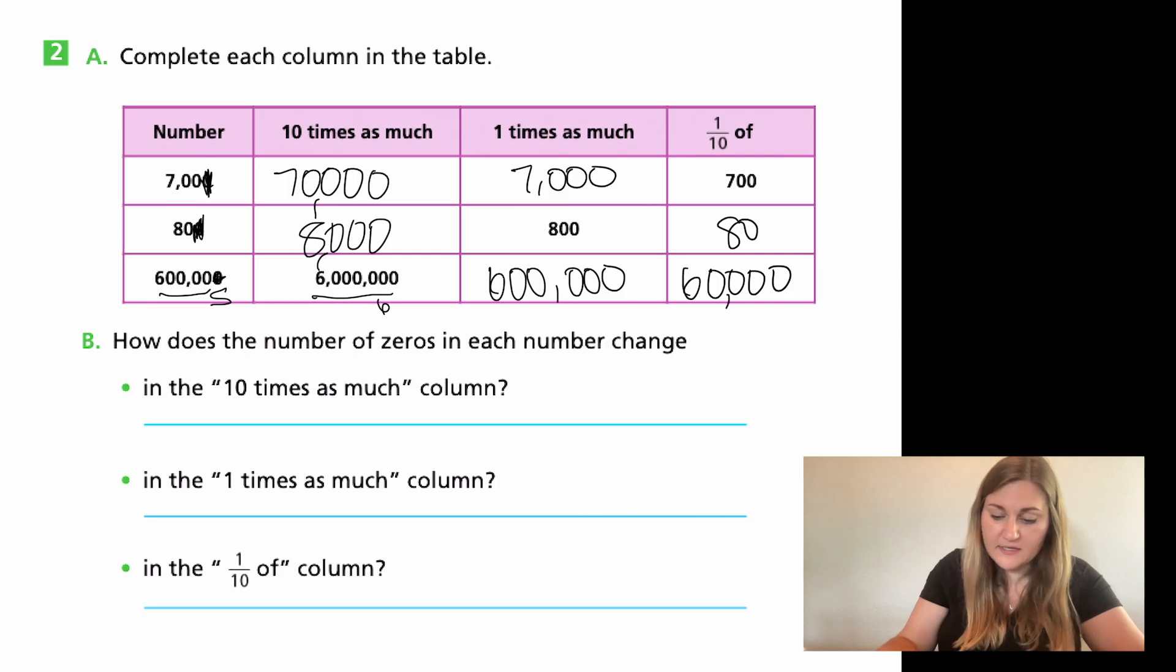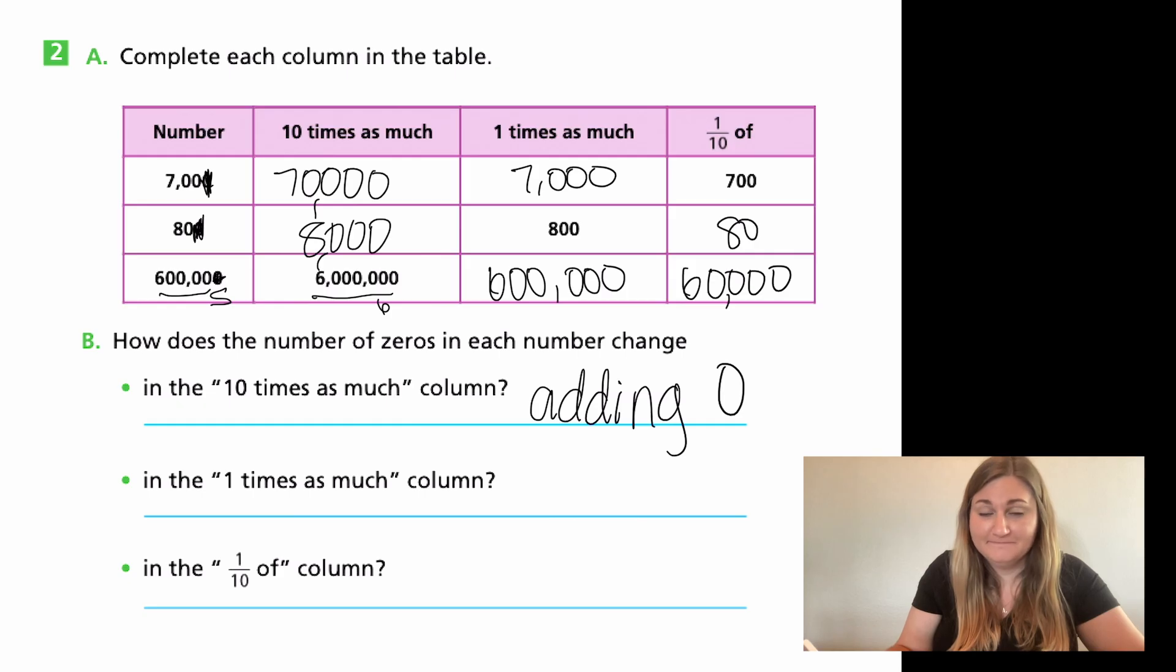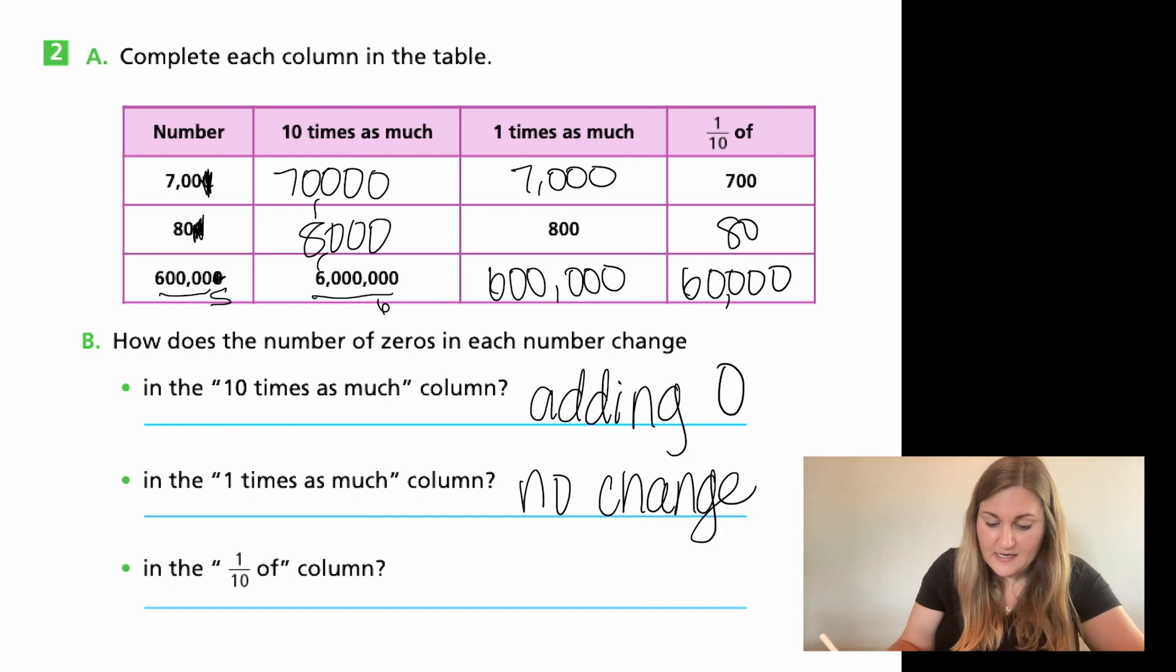Alright, now moving into B, talking about how does the number of zeros in each number change in the ten times as much column? And I know I already said this, we're adding a zero. How do the zeros change in the one times as much? They don't. There is no change. And in the one tenth of column, we're pulling that zero away. So we are taking away a zero.